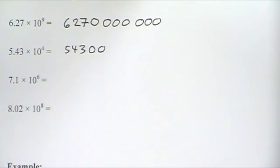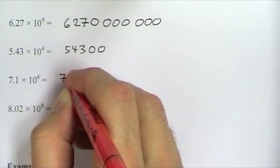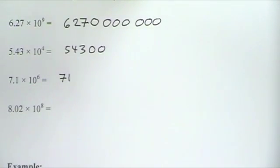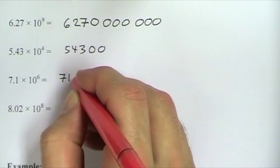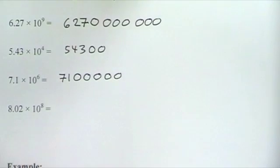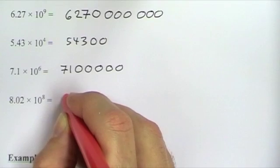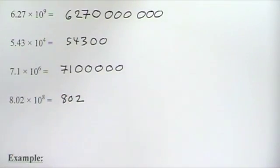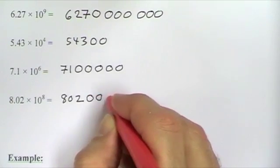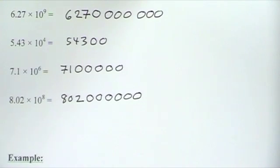For 7.1 times 10 to the 6: multiplying by 1 power of 10 gives 71, then we add 5 noughts. For 8.02 times 10 to the 8: multiplying by 2 powers of 10 gives 802, then we add 6 noughts. And that's how to convert from standard form into an ordinary large number.